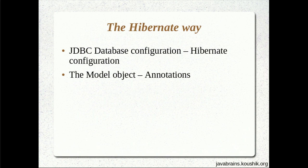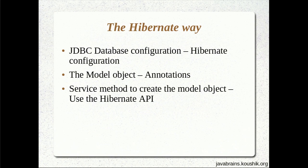The model object needs to be written and we will configure Hibernate to get data out of it using annotations. The third step is the service method. The service method will have an instance of the model object, and instead of passing it to a data layer which uses JDBC, in the Hibernate way of doing things the service method passes the object directly to Hibernate APIs. It's the Hibernate APIs which actually do the saving of the model object.